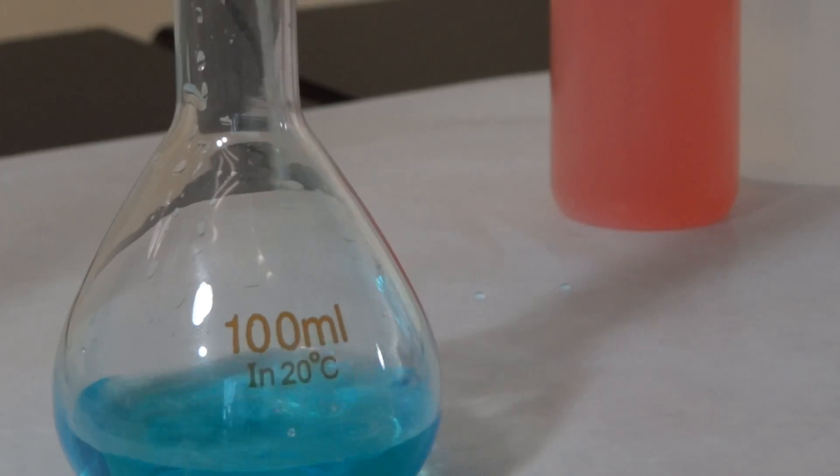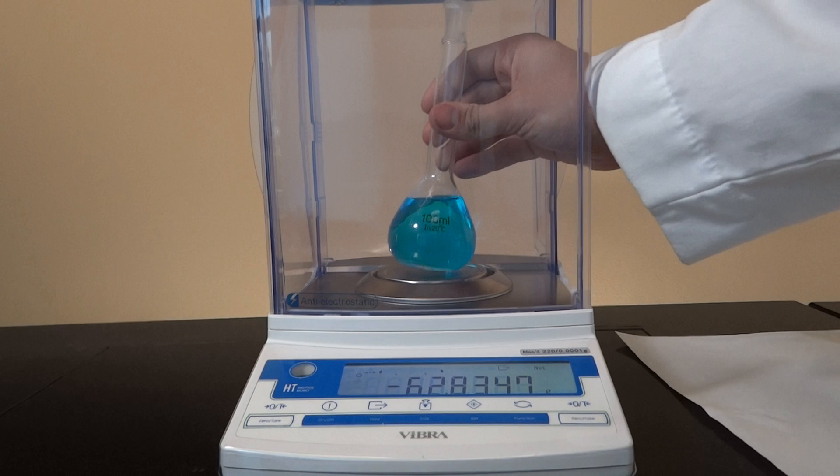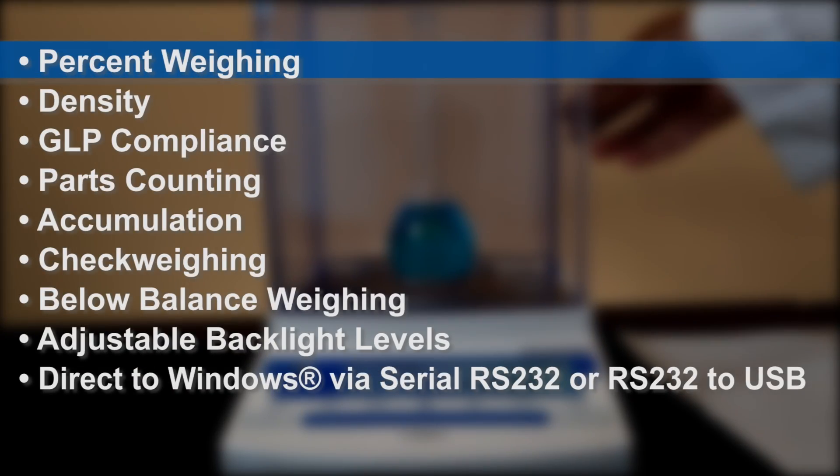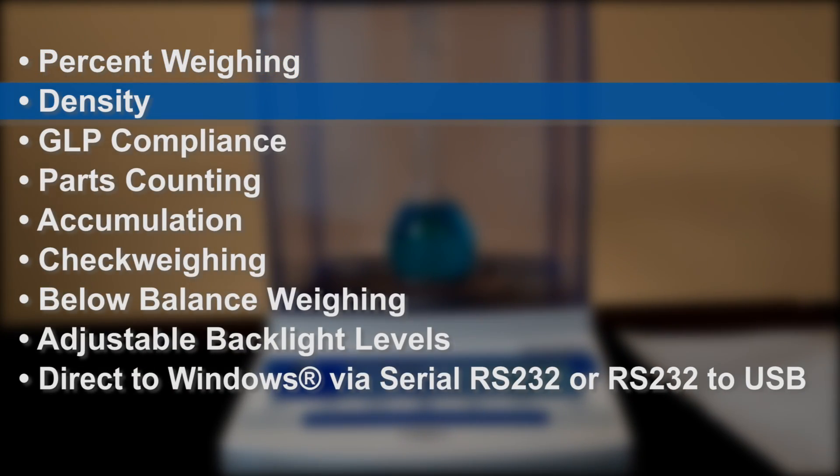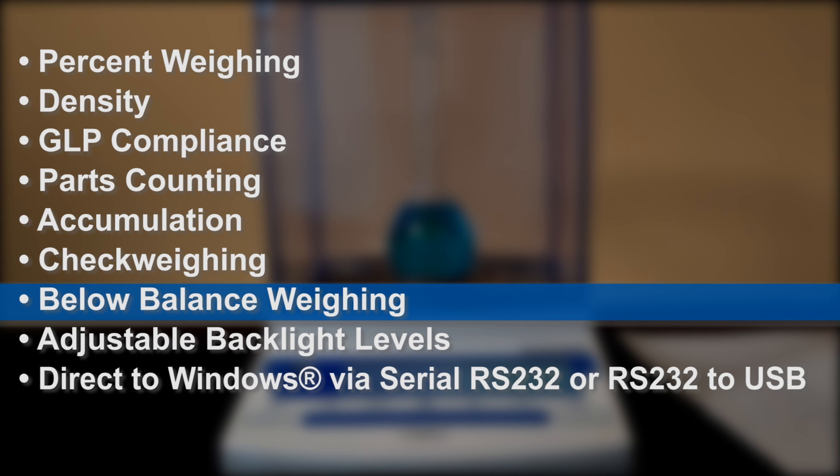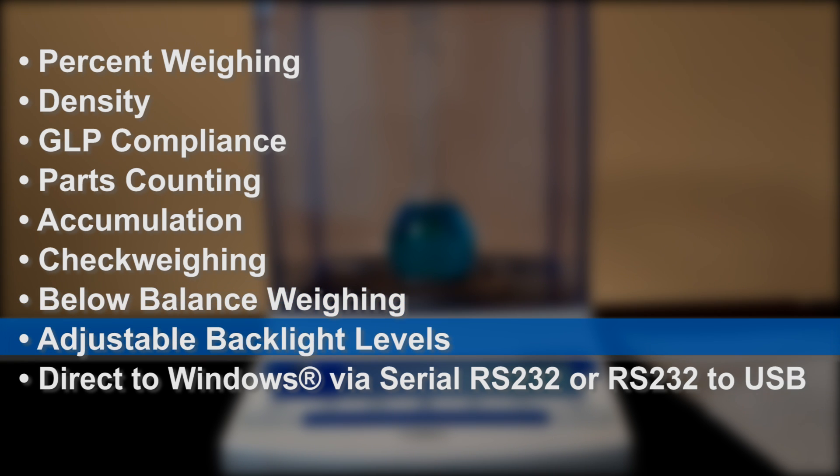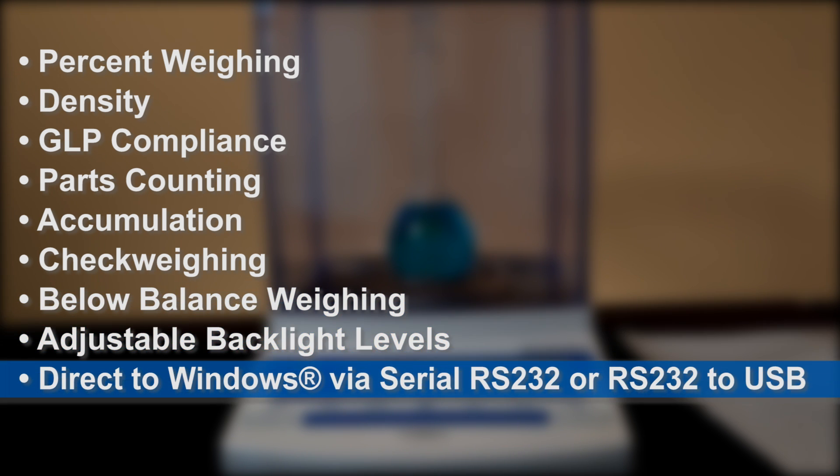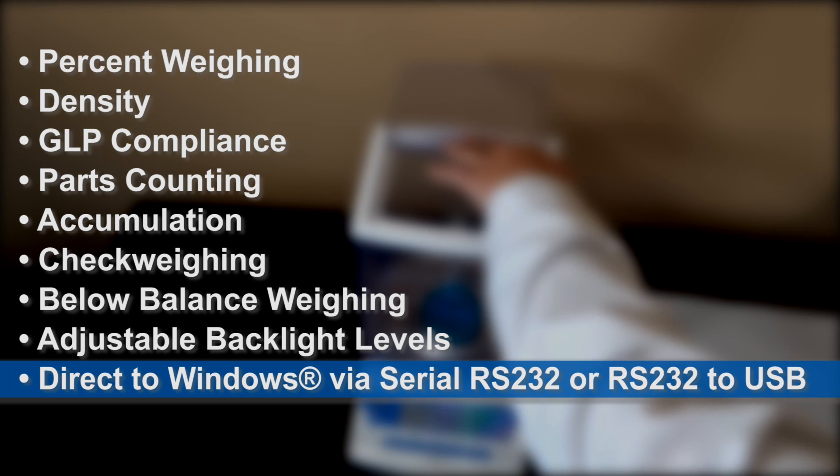The HT224R is designed to fulfill many laboratory applications with features such as percent weighing, density, GLP, parts counting, accumulation, check weighing, below balance weighing, adjustable backlight levels, and direct to Windows via serial RS-232 or USB.